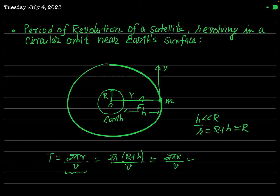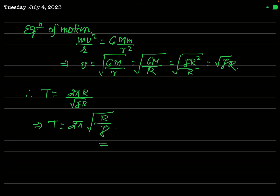For the satellite in circular motion, the equation of motion is mv²/R = GMm/R². From this, v = √(GM/R). This is called the orbital velocity. Since r ≈ R and GM = gR², one R cancels and v = √(gR). Substituting into T = 2πR/v gives T = 2πR/√(gR) = 2π√(R/g).